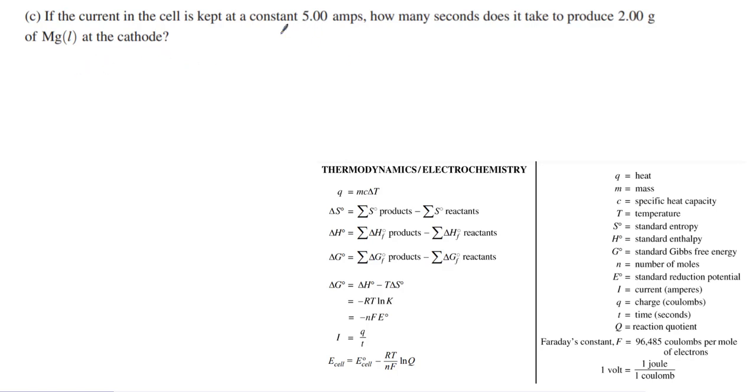So we have, we know our current, our I, is 5.00 amps. And you can see that means we're going to be using this equation right here, I equals Q over T. And we have 2 grams of magnesium. Okay, so how are we going to go about doing this question?